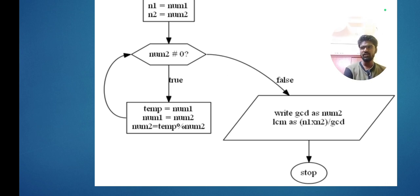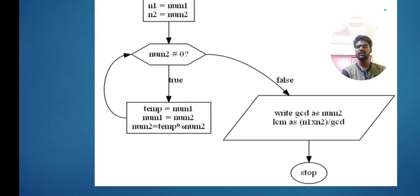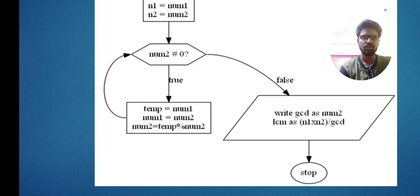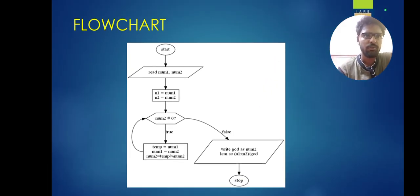For least common multiple — taking 2 and 3: multiples of 2 are 0, 2, 4, 6, etc., and multiples of 3 are 0, 3, 6, 9, etc. We have a formula to calculate LCM: num1 multiplied by num2 divided by GCD. For example, 2 into 3 divided by the HCF gives 6, which is the LCM. This will be shown in our flowchart.